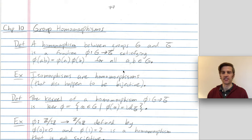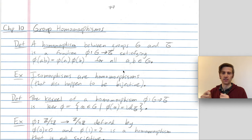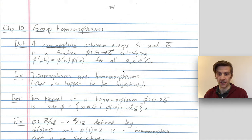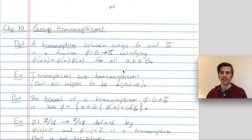Homomorphisms are generalizations of isomorphisms. Isomorphisms are homomorphisms that are bijective — the groups have to be the same size, and the map between the two groups has to be a bijection. By contrast, for homomorphisms, you can have homomorphisms between groups of different sizes, or even between two groups of the same size where the function is not bijective. So it's not an isomorphism.